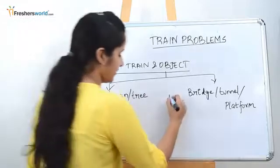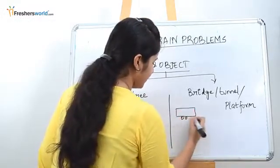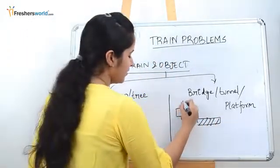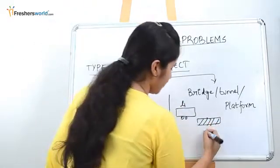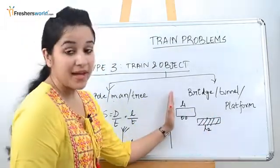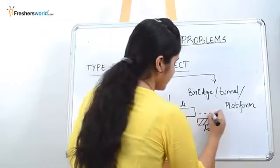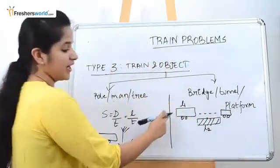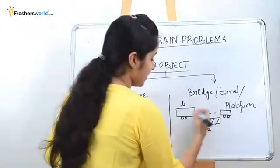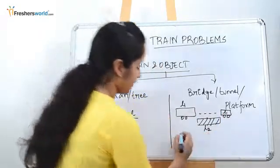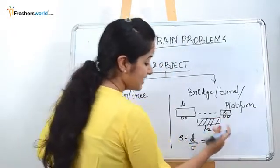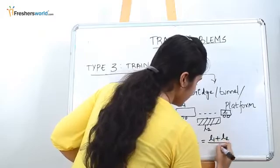For a bridge or tunnel: let's say the length of the train is L1 and the length of the bridge is L2. The train has completely crossed the bridge when the back end of the train comes past the far end of the bridge. So the total distance travelled by the train is L1 plus L2. The formula is: speed = (L1 + L2) / t.